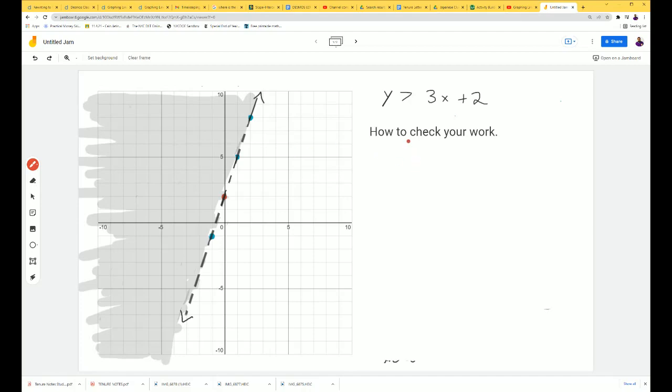Okay, so you have officially graphed your inequality, but you want to make sure you graphed it correctly. So how do you check your work? Something we could do is use a test point. So what a test point is, is you're going to pick a point in the shaded area. Remember, any point in the shaded area is considered a solution to your inequality. So you pick any point in the shaded area.